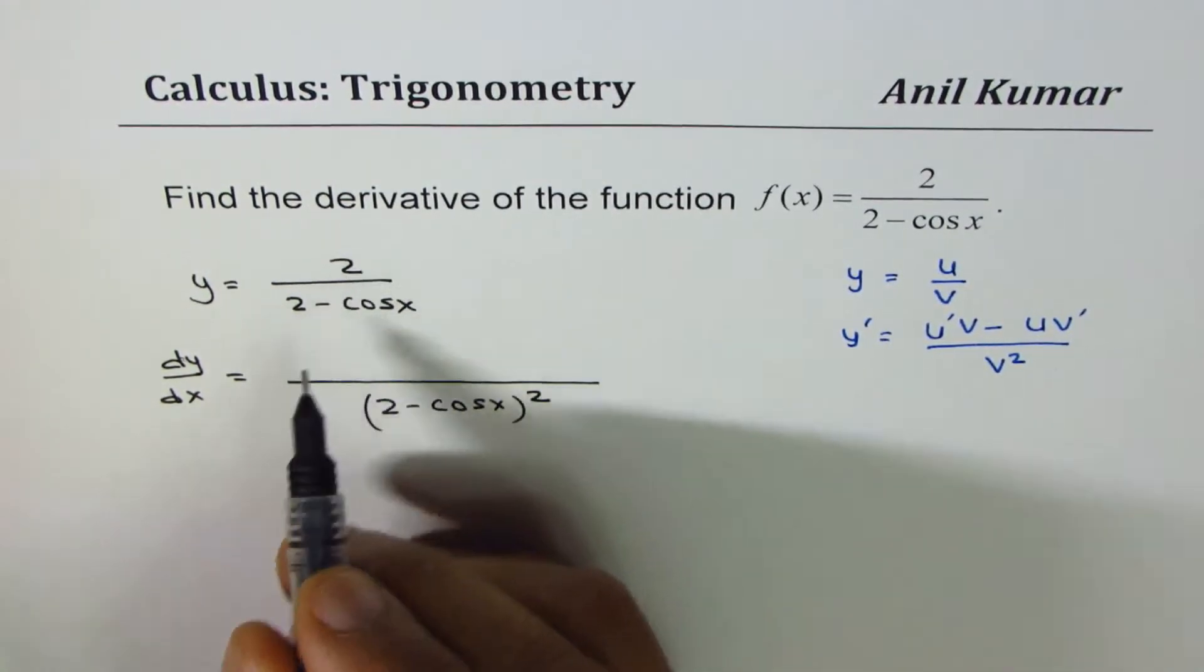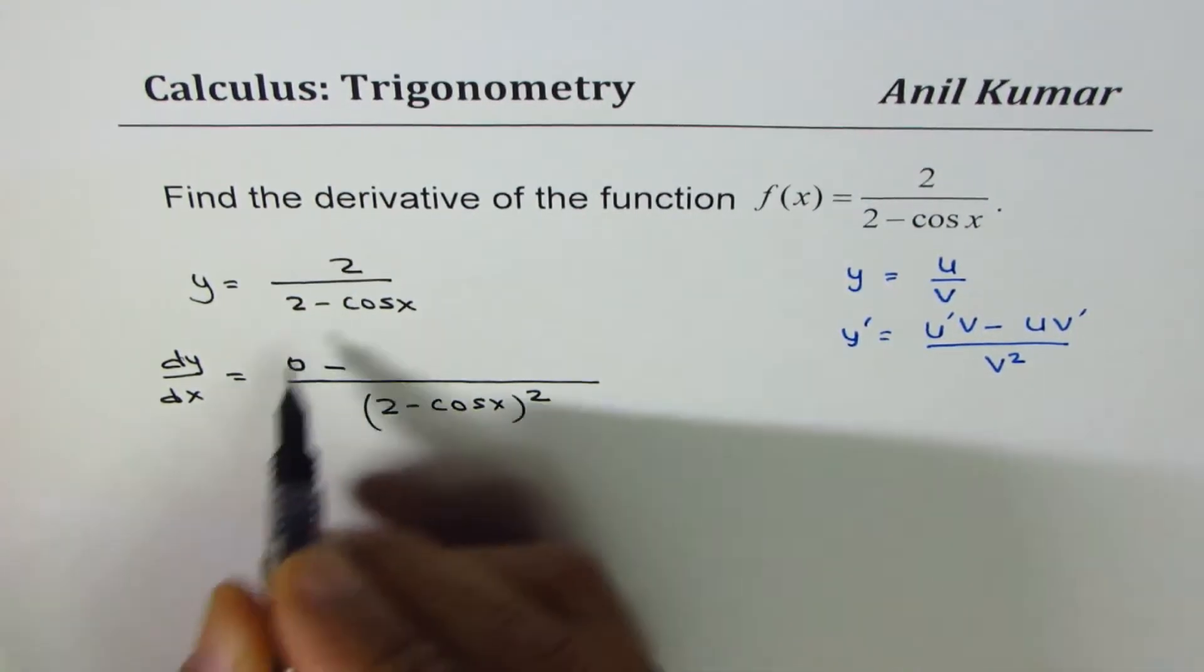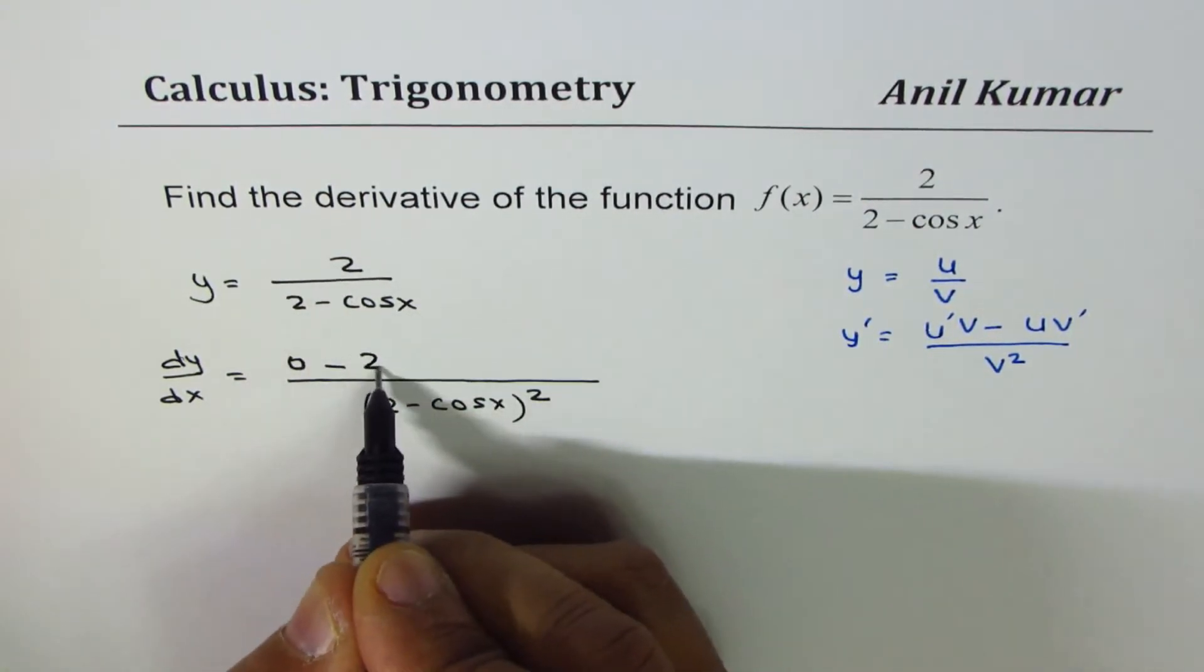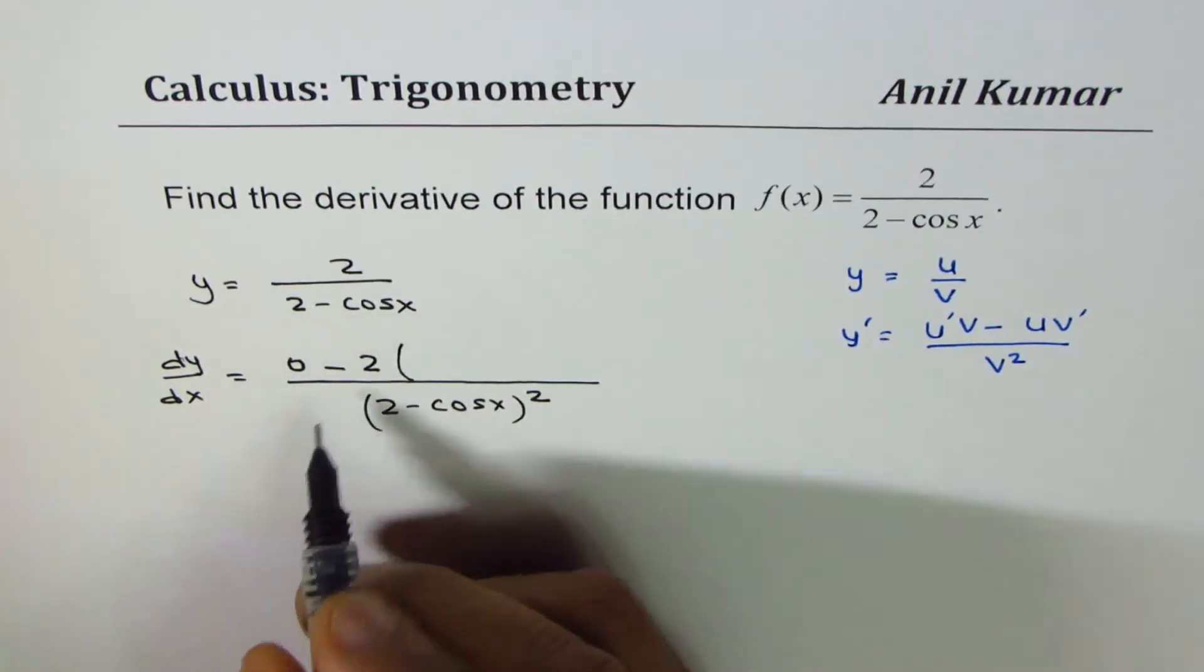Derivative of 2 is 0, so first term is 0, minus 2 times derivative of this function,